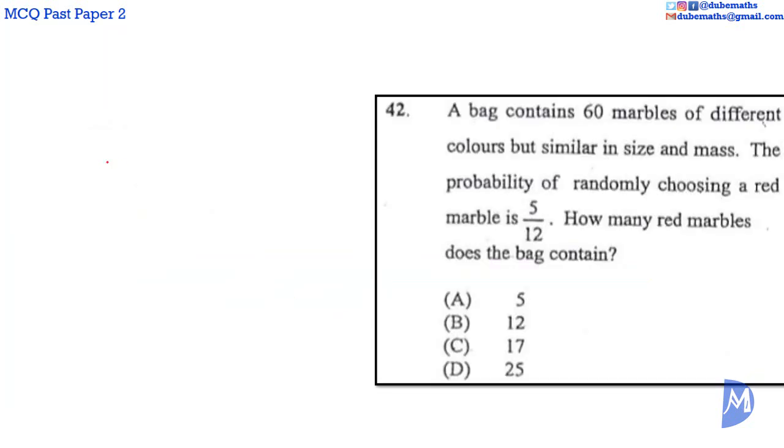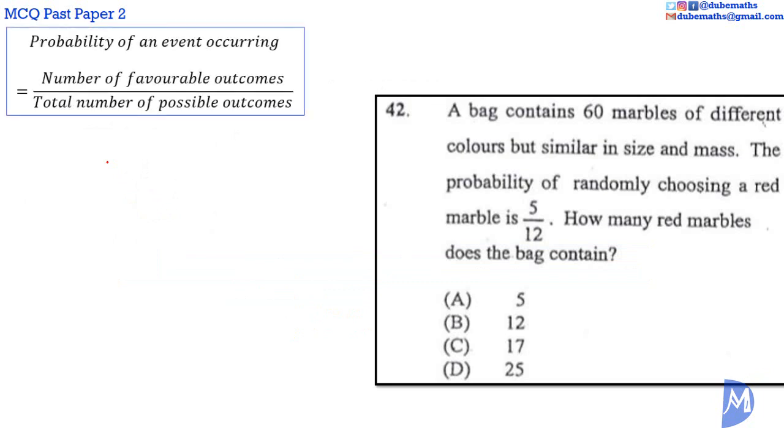Question 42. The probability of an event occurring is equal to the number of favorable outcomes over the total number of possible outcomes. In this case, we are dealing with the probability of drawing a marble at random from the bag, and we are given that the probability of that is equal to 5 over 12.